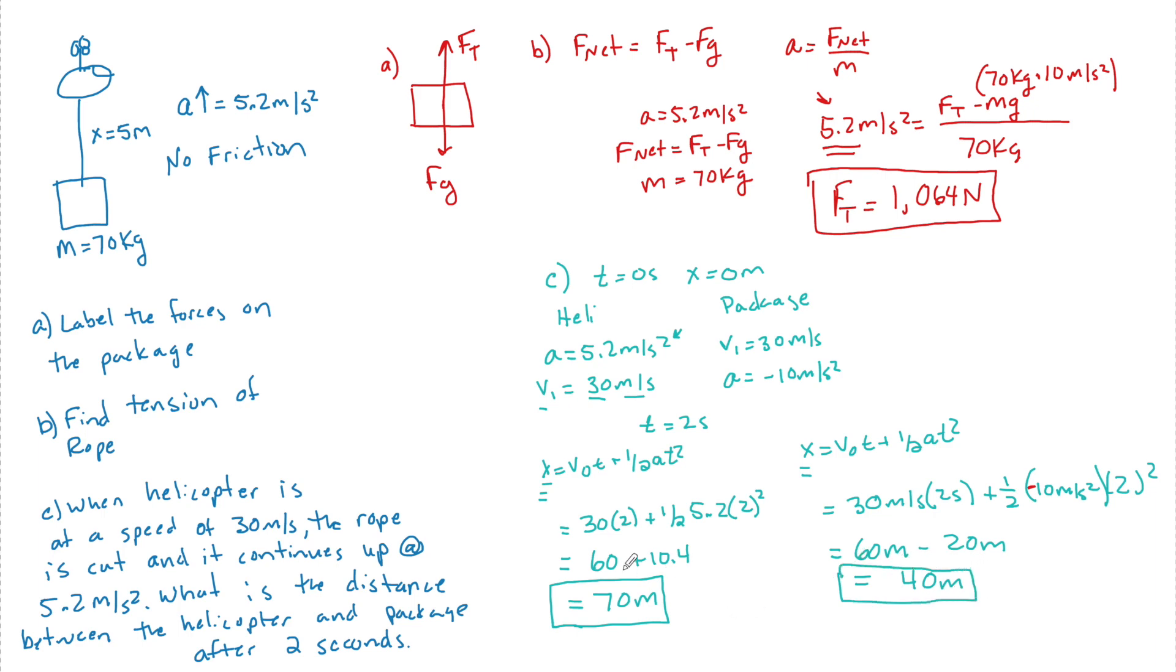So if this is at 70 and this is at 40, this box has a displacement or a difference of distance equal to 30 meters. So after 2 seconds, the helicopter and the box would be 30 meters apart. Hope that helped guys. Stay tuned for more review questions.